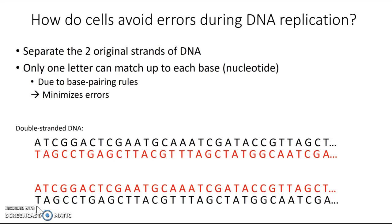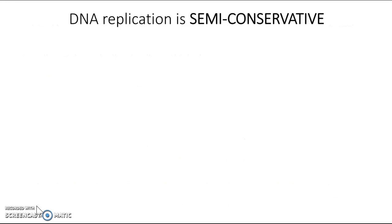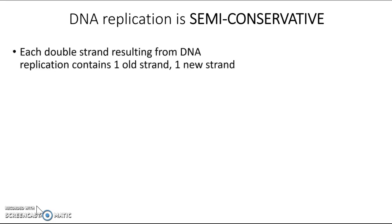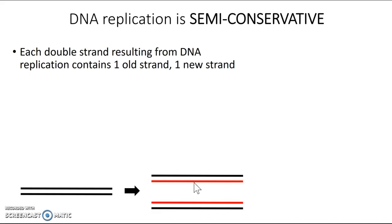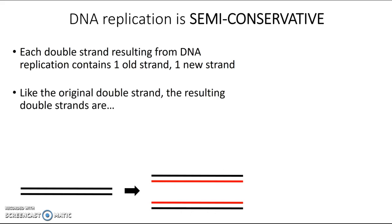Because DNA replication occurs in this manner, it is referred to as semi-conservative. Each of the old strands gets conserved and separated, and then the double strands that are created each contain one old strand and one new strand. If we zoom out to where we just see the strands, here's our original double strand that gets separated and then a new strand is built to match up to each one of the originals. Each of the new double strands that gets created is going to be complementary in terms of the nucleotide sequences.